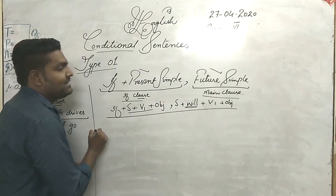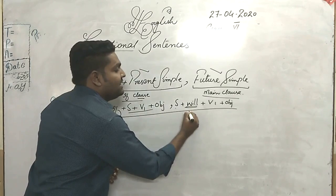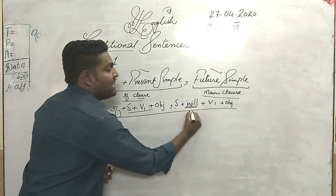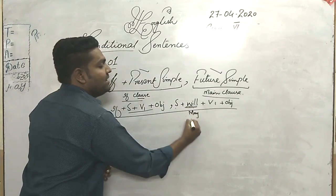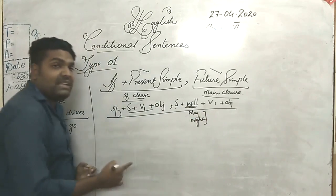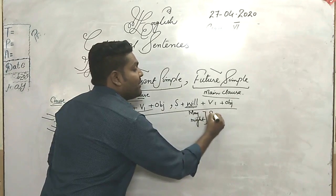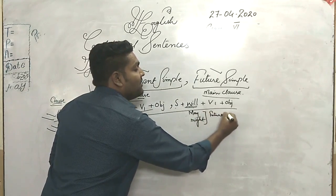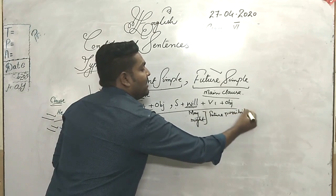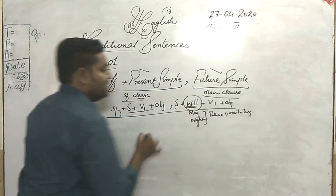With 'will,' we can also use 'may' or 'might,' because these two modal verbs talk about future possibility. But let's focus on 'will' for now.